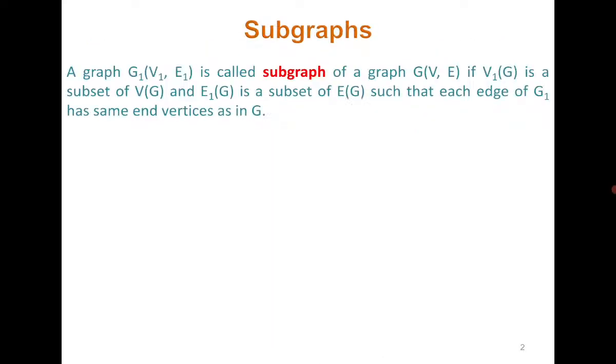We start with a subgraph. Graph G1 is a subgraph of graph G if the vertex set of G1 is a subset of the edge set of G such that each edge of G1 has the same end vertices as in G.